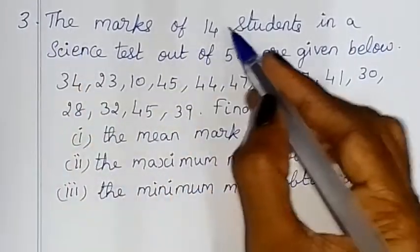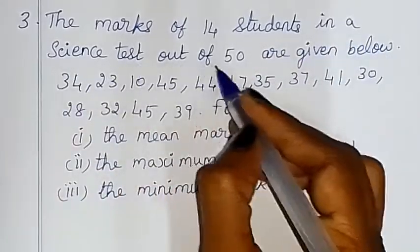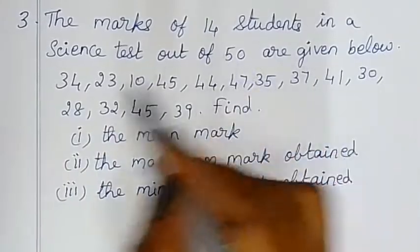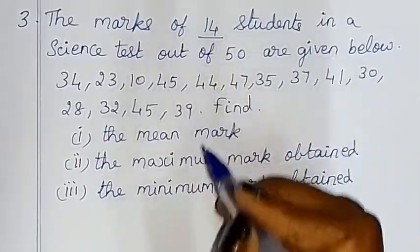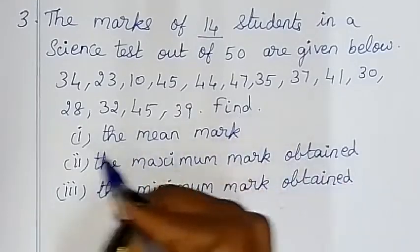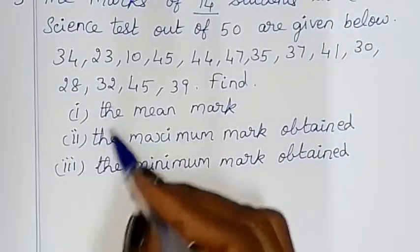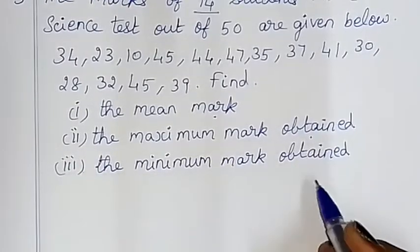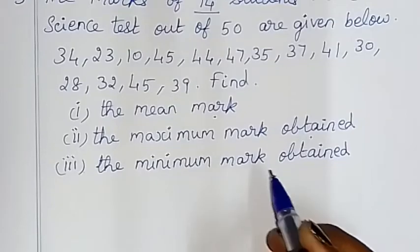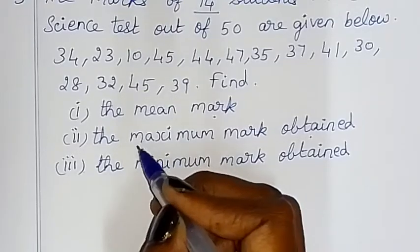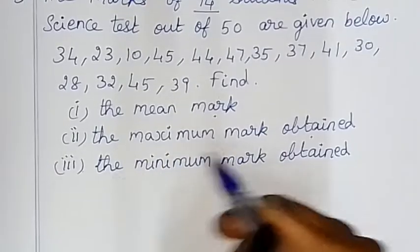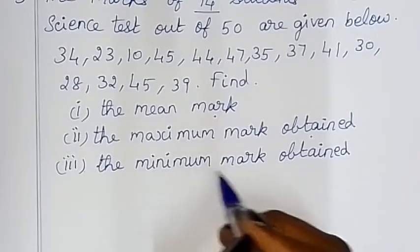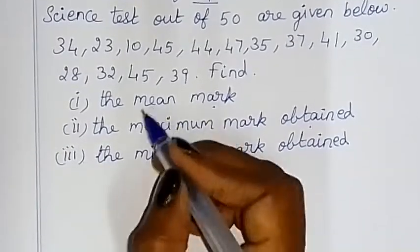The marks of 14 students in a science test out of 50 are given below: 34, 23, and so on. There are 14 students. Find the mean mark, the maximum mark, and the minimum mark. The maximum mark is the greatest value, and the minimum mark is the smallest value.